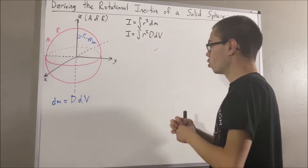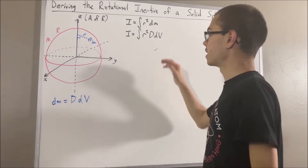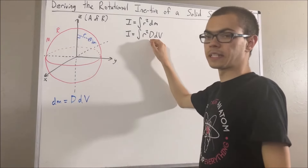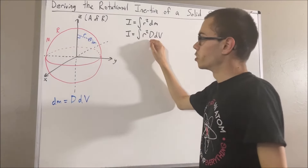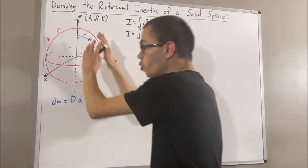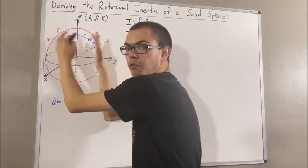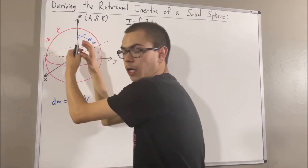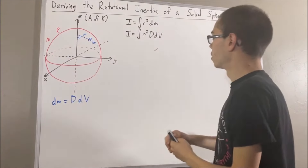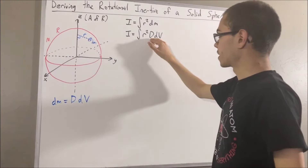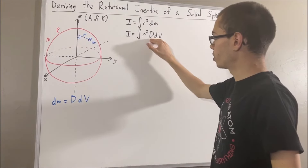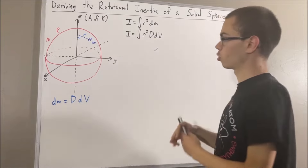So let's substitute dm for density times differential volume. For our purposes, we're going to say that the density is constant — we have uniform density throughout our solid sphere. Since density is a constant, we can pull it to the outside of our integral.